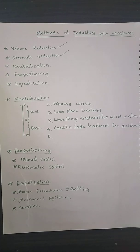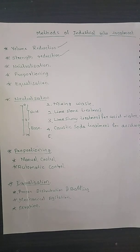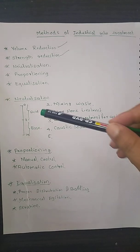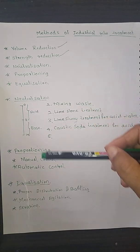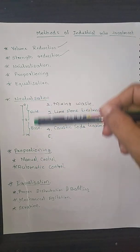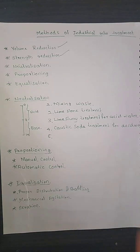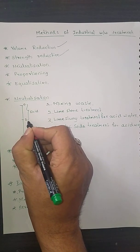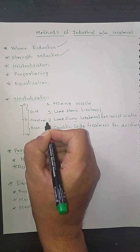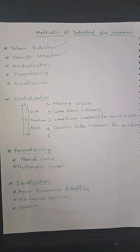Now we are going to discuss neutralization. As we know, pH is the negative logarithm of hydrogen ion concentration. pH imparts acidity or basicity to the water. If the pH of a solution is between 0 to 7, we call it an acid; 7 is neutral; and from 7 to 14 we call it a base.